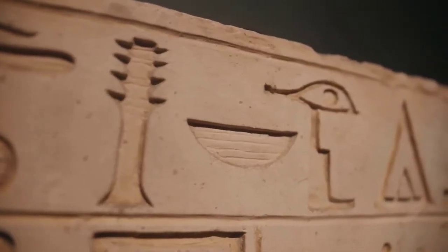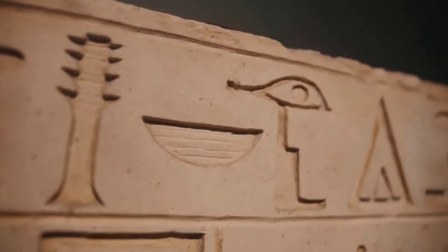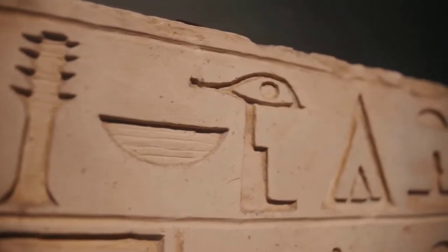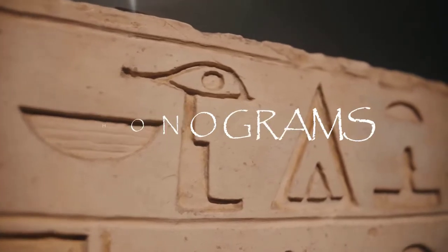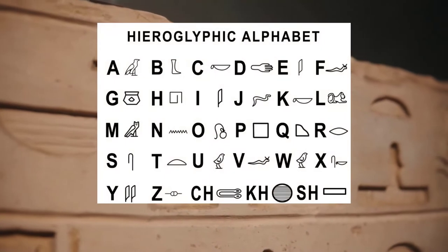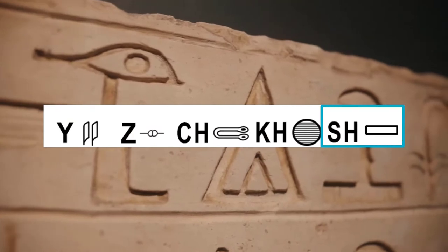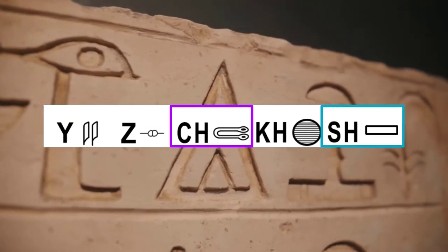Some symbols represented a full syllable of two or three consonants. These symbols are also called phonograms. Examples include sounds like 'sh' or 'cha.'